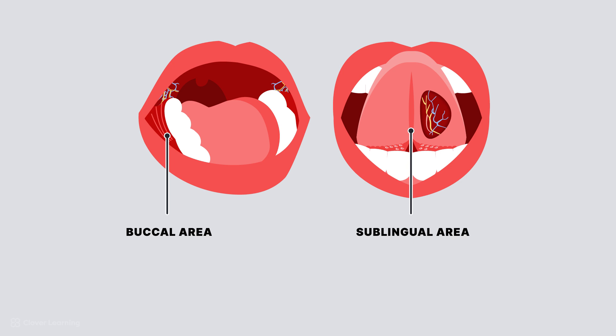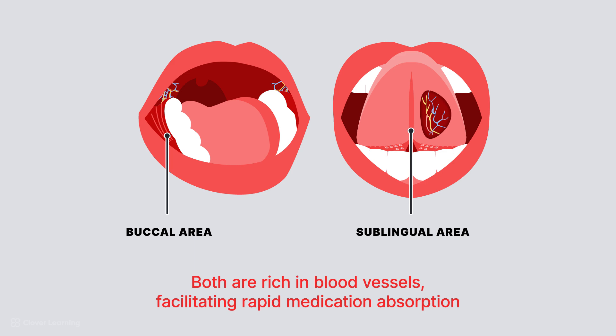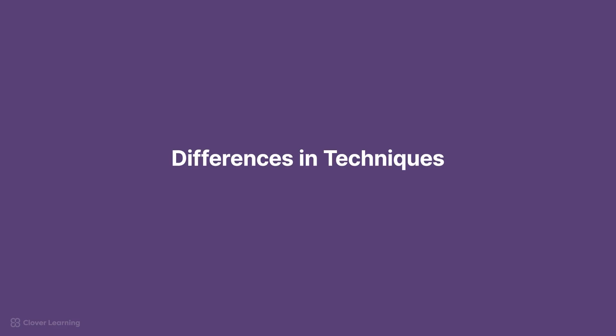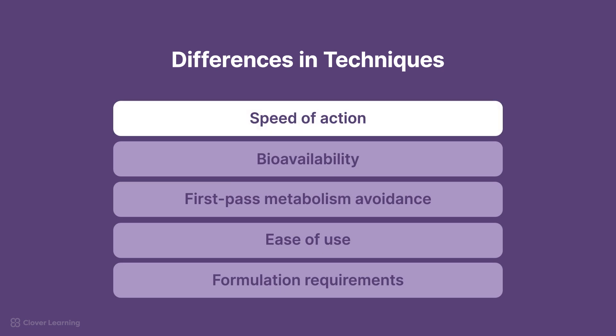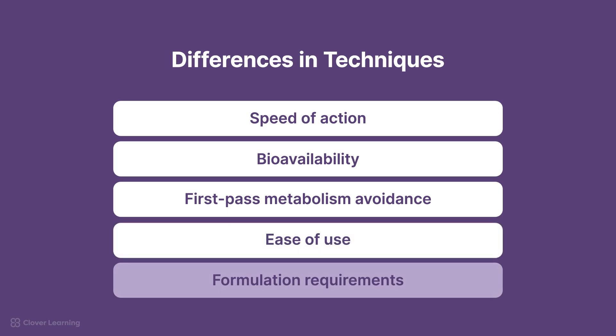For instance, the buccal area inside the cheek and the sublingual area under the tongue are rich in blood vessels, facilitating rapid medication absorption. The key differences in the techniques involving this anatomy are speed of action, bioavailability, first-pass metabolism avoidance, ease of use, and formulation requirements.